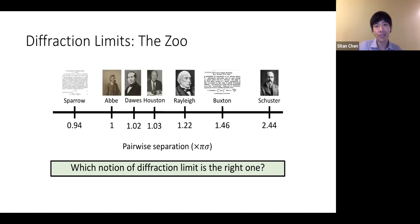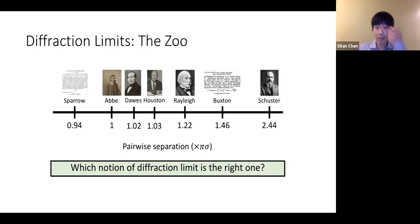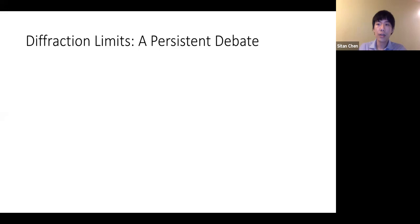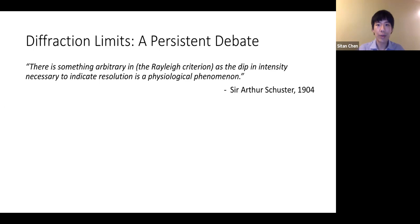This begs the obvious question: which notion of diffraction limit is actually mathematically meaningful? Is there a right notion at all? This question has had a very long historical debate ever since the calculation of the Airy disk by Airy and the proposal of the Rayleigh criterion. Schuster, who proposed the two-times-Rayleigh threshold, said: 'There is something arbitrary in the Rayleigh criterion, as the dip in intensity necessary to indicate resolution is a physiological phenomenon.' Pointing out that the Rayleigh criterion is somehow arbitrary is a recurring theme in this literature.